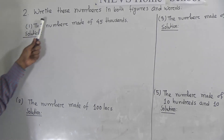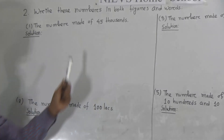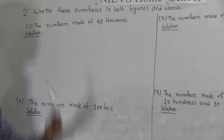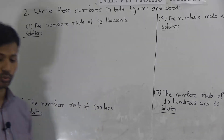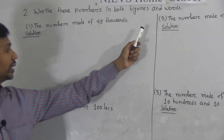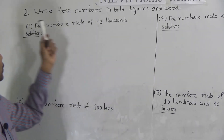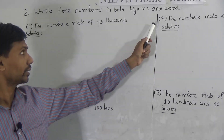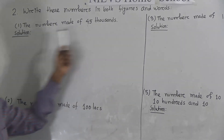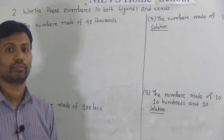You see question number 2: write these numbers in both figures and words. Question number 1 is the number made of 45,000. Let's look at questions 1, 2, 3, then 4, then 5. Question number 4 is the same as question number 1 and 3, so I did not write that question number — you try to solve it yourself.